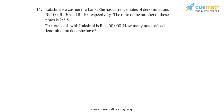Question 14 says that Lakshmi is a cashier in a bank. She has currency notes of denominations rupees 100, rupees 50, and rupees 10. The ratio of the number of these notes is 2:3:5. The total cash with Lakshmi is rupees 4 lakhs, and we have to find how many notes of each denomination she has.